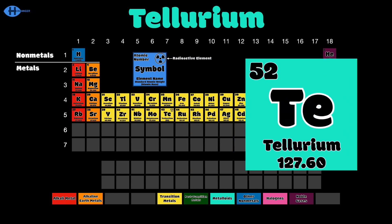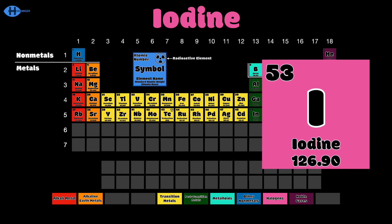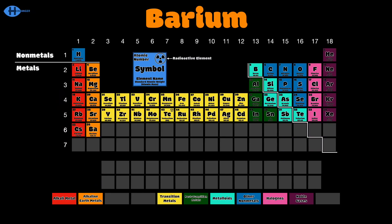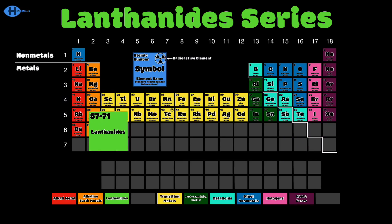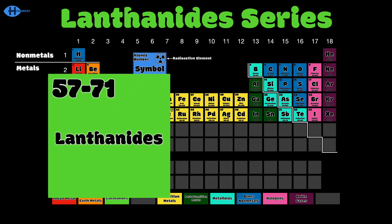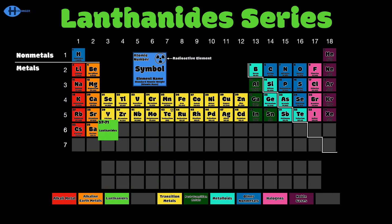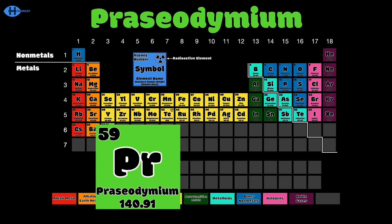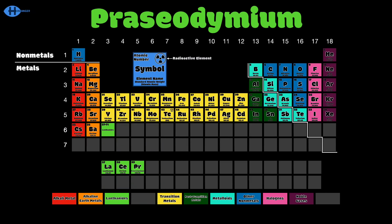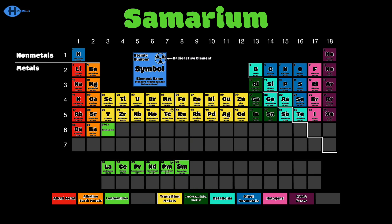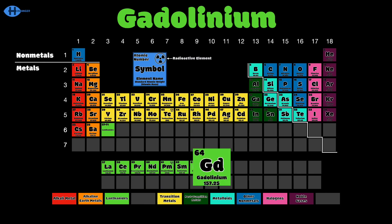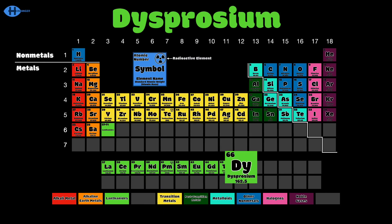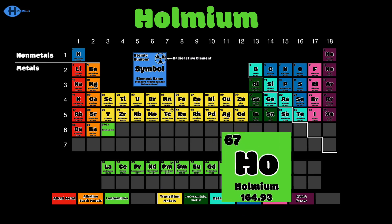Tin, antimony, tellurium, iodine, xenon, cesium, and barium. This is the point where the lanthanides begin — elements 57 to 71. Lanthanum, cerium, praseodymium, neodymium, promethium, and samarium, europium, gadolinium, terbium, dysprosium, holmium.